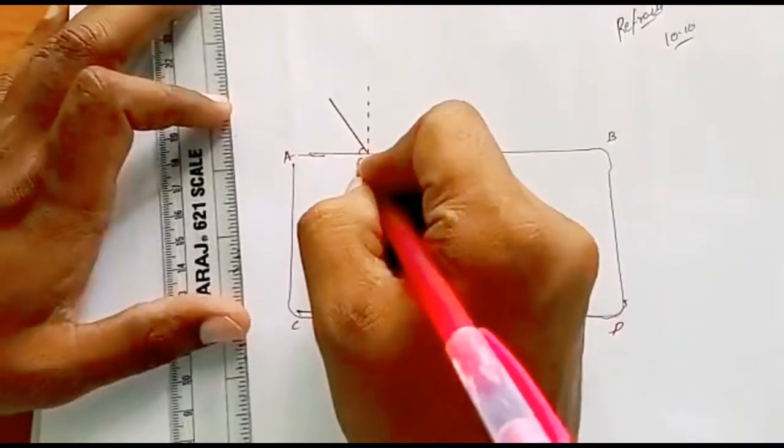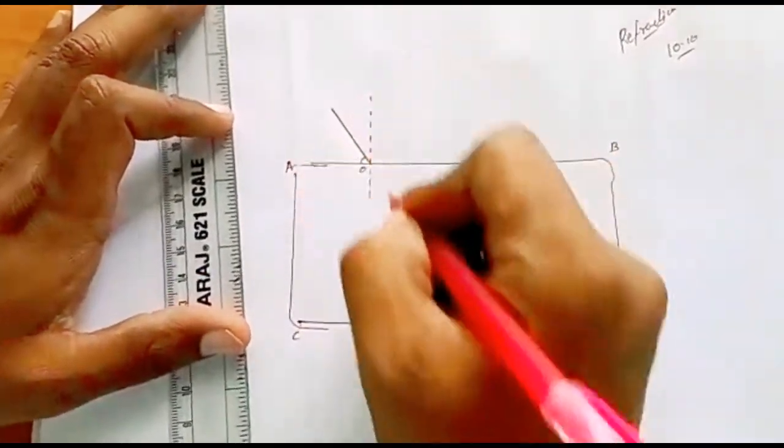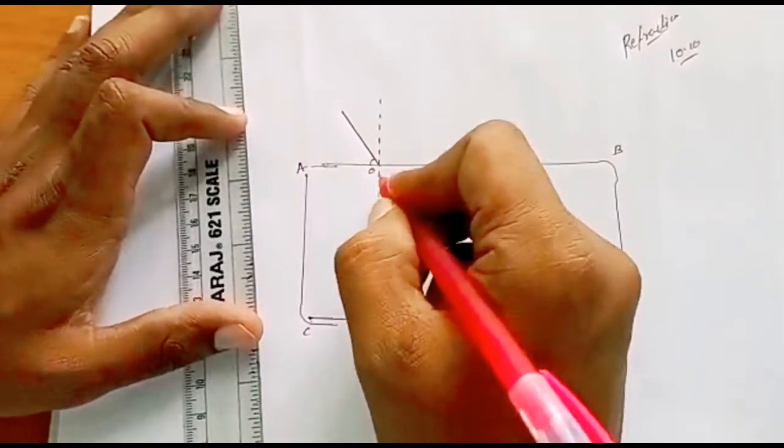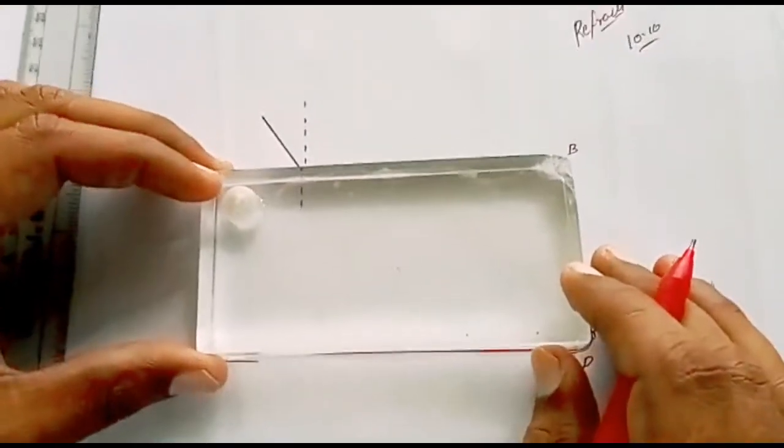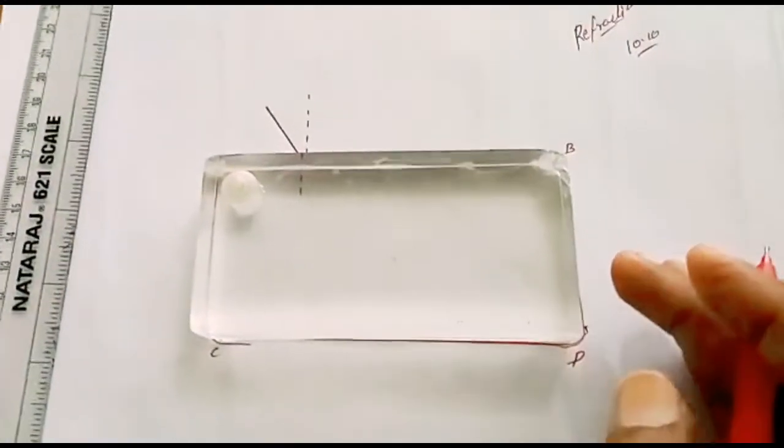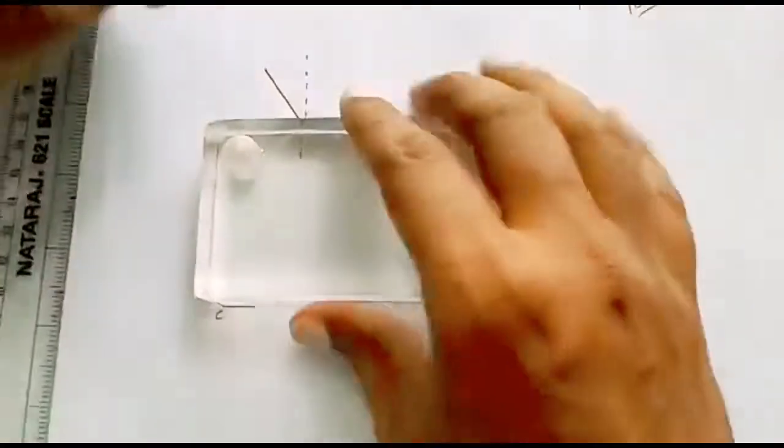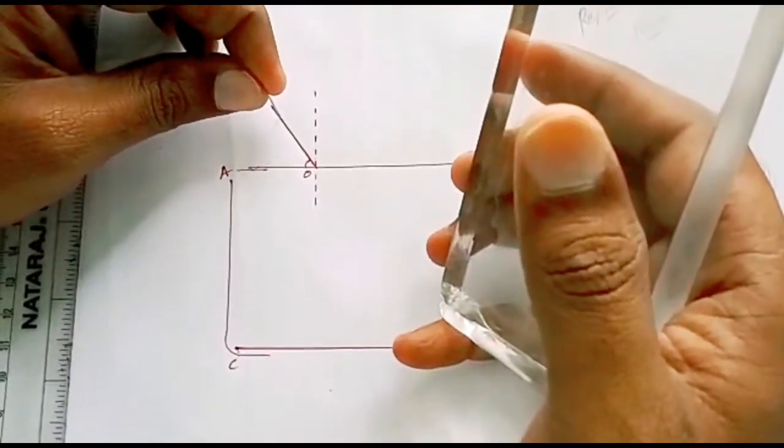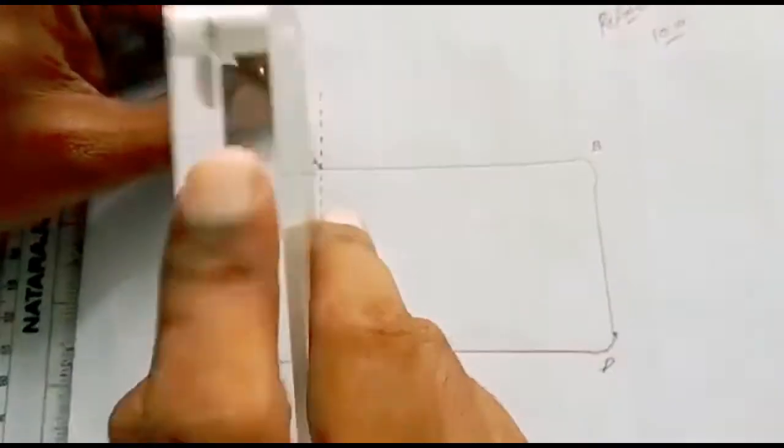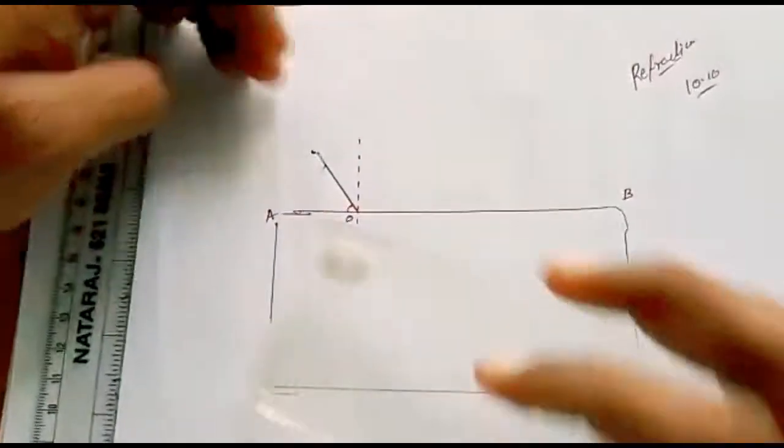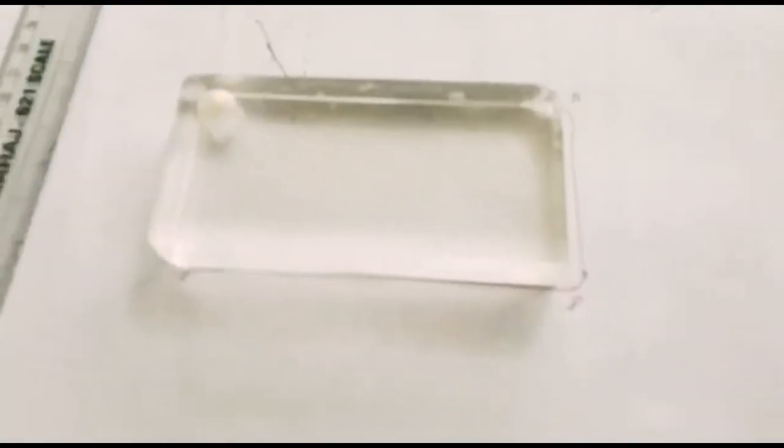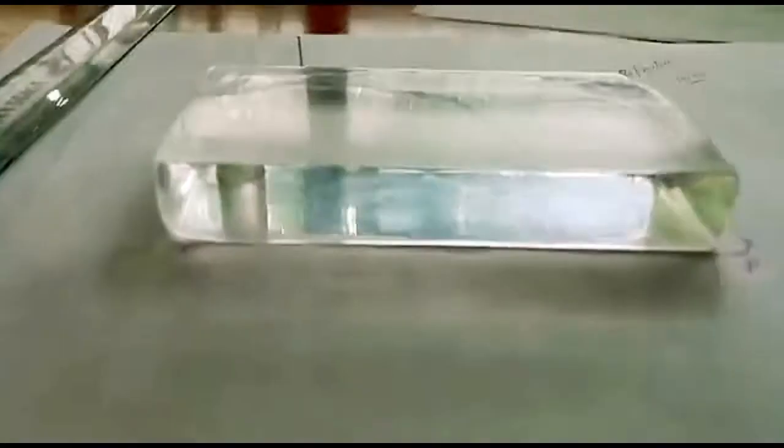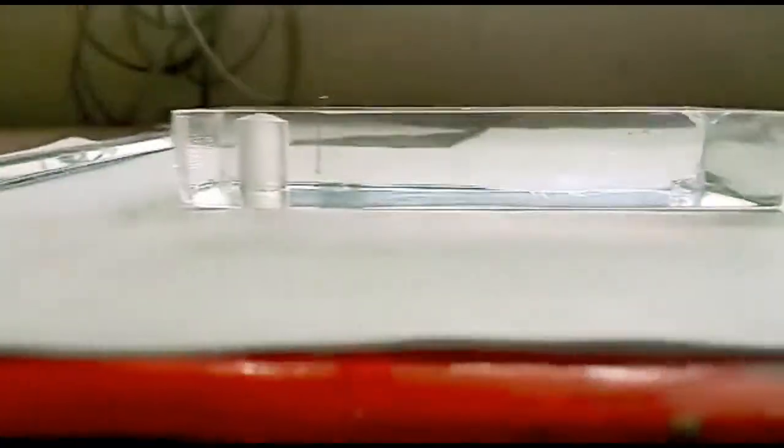The point of intersection of normal line, this ray, at side AB is O. Now I will place this slab and take a pin. Before placing the pin, I will try to tap it there. Now what we will do, we will take a point where exactly this pin is coinciding.